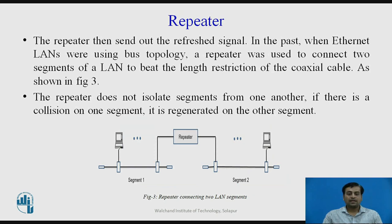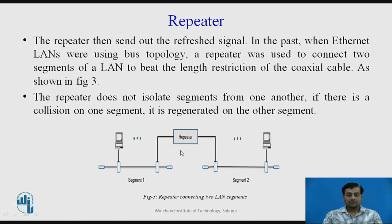In the past, when Ethernet LANs used bus topologies, repeaters were used to connect two segments of a LAN to overcome the length restrictions of the coaxial cable, as shown in figure three. Segment 1 and segment 2 are connected to each other by this repeater, so the cable length restriction is overcome by installing the repeater between the two segments.